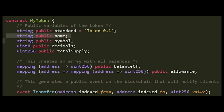The next variable is a public string called 'name' — this will probably be the name of our cryptocurrency. Then we have another public string called 'symbol,' which provides a symbol for our cryptocurrency — like BTC for Bitcoin, ETH for Ethereum, or USD for the US dollar. This is just a string, not a logo.